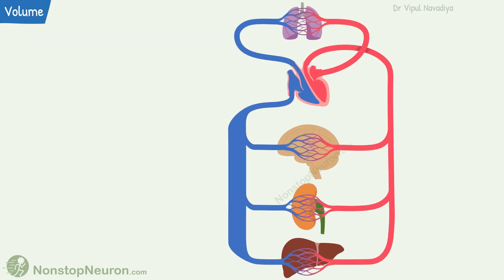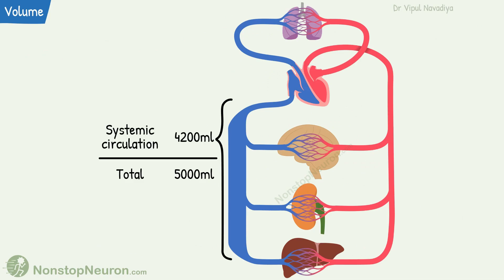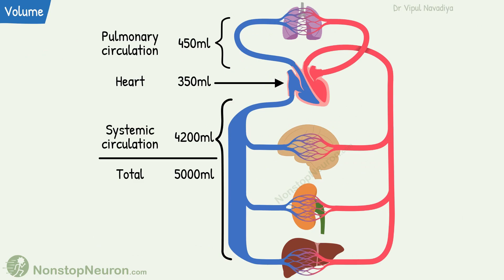Now the final parameter of the video: volume. The circulatory system contains a total of 5,000 ml of blood. Out of it, 4,200 ml is present in the systemic circulation, 450 ml in the pulmonary circulation, and 350 ml in the heart. Out of 4,200 ml in the systemic circulation, 700 ml is in the arteries, 300 ml in capillaries, and 3,200 ml is in veins.